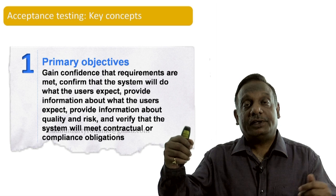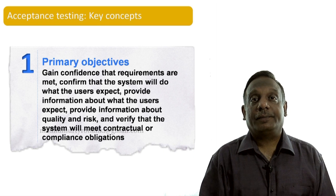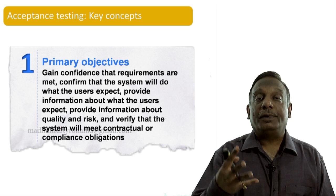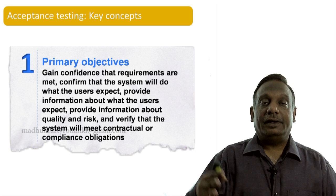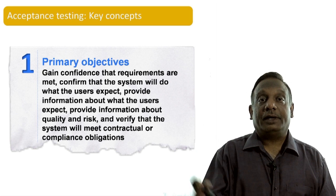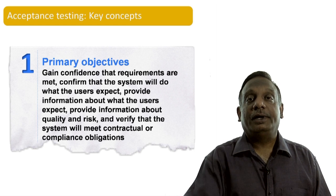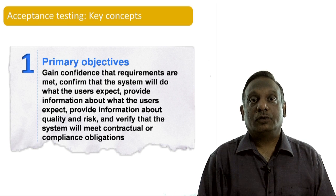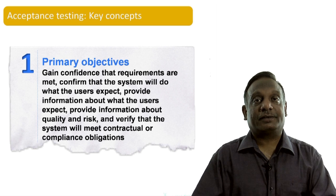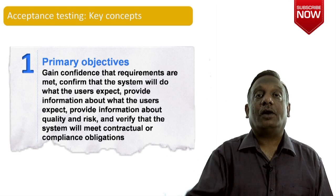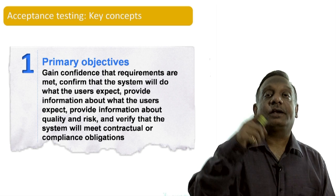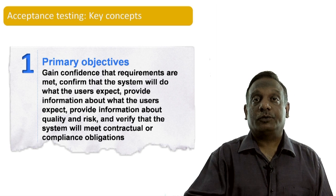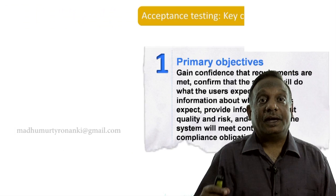Based on the objective, we may call the acceptance test by different names. Some systems require meeting not only functional requirements but also compliance obligations. For example, if you build a system for the FDA — the Federal Drug Authority — it is not enough if your customer and you accept the system; the government agency FDA also has to check whether it is complying with their requirements before the system can be put into production.